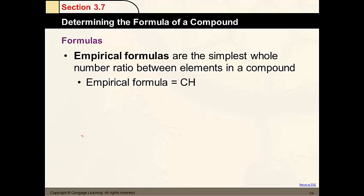We're going to talk about empirical formulas first. They are the simplest whole number ratio between the elements of a compound. For example, this is a very simplified version of a compound where it's just a one-to-one ratio between atoms.